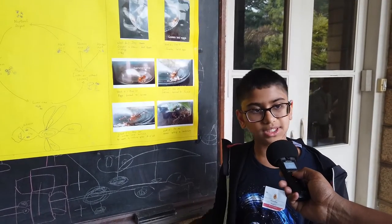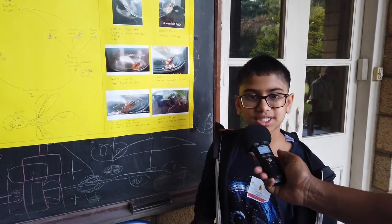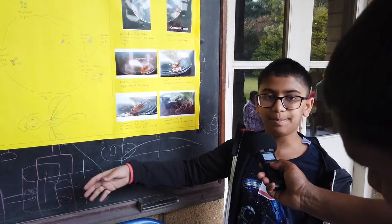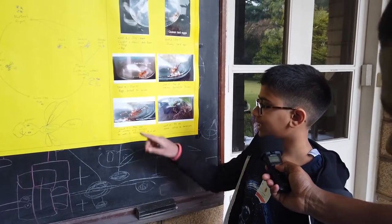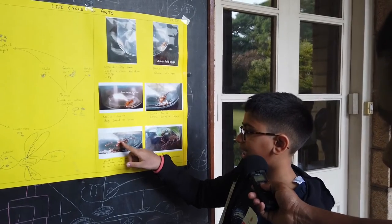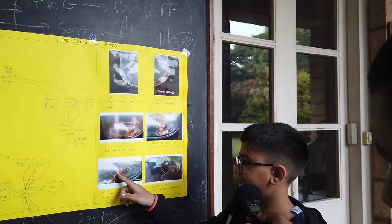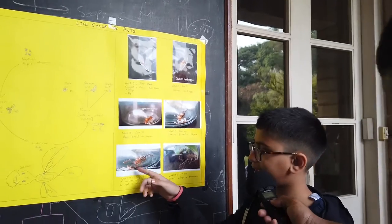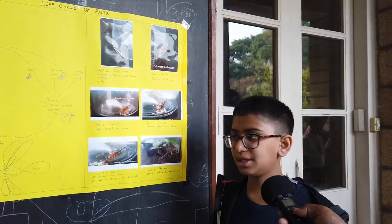Secondly, they have a large mesosoma, which is the middle part of an ant. Thirdly, they are also generally bigger. You can see all of those over here. Flyaway has a wing, as you can see, and she has a bigger mesosoma than her daughters.